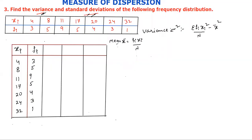The standard deviation is equal to σ, which is the square root of sigma squared. First we find the mean, then we take all the fi·xi values and multiply to find the mean.